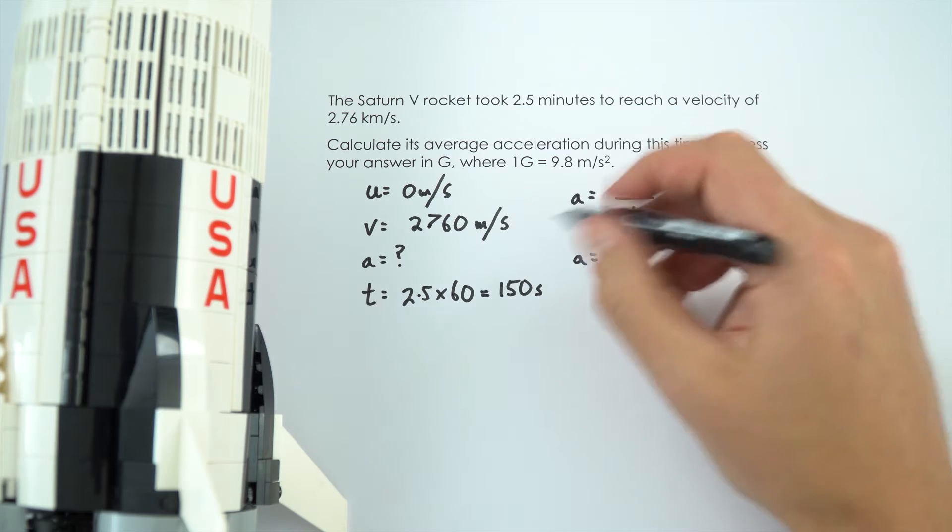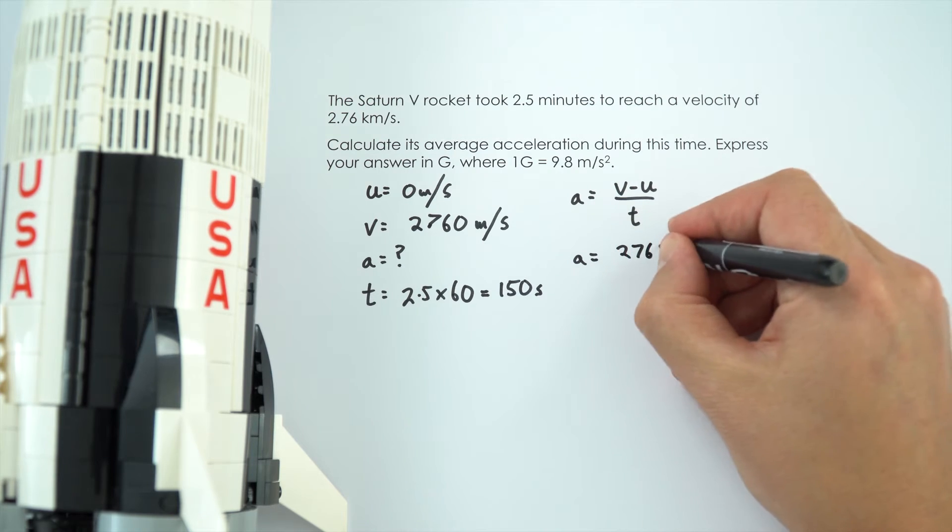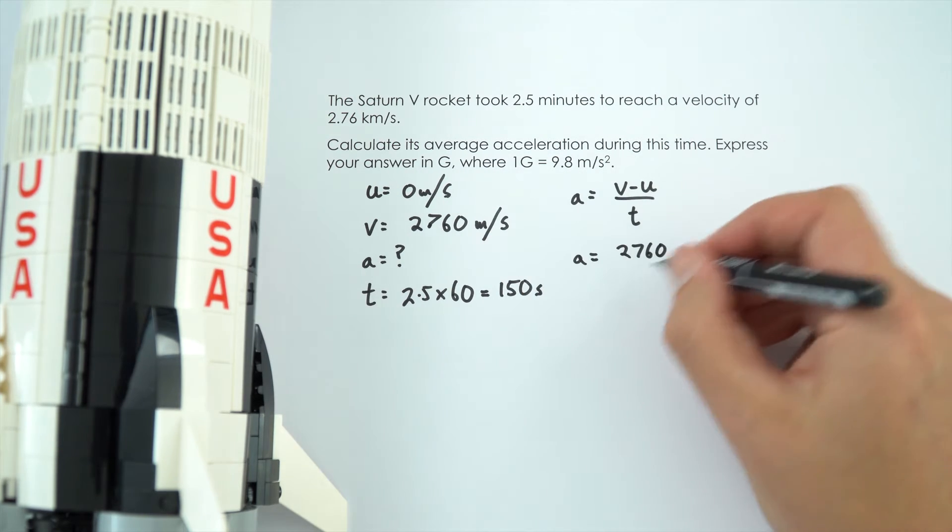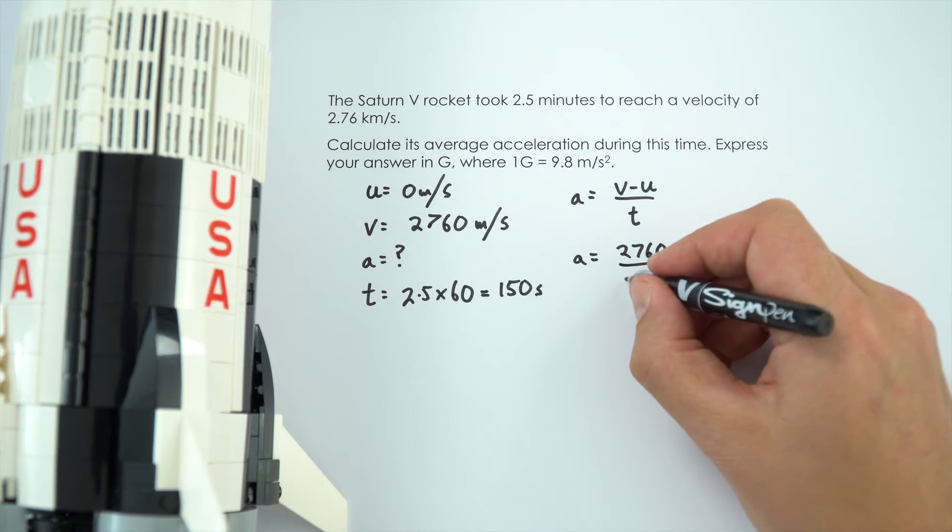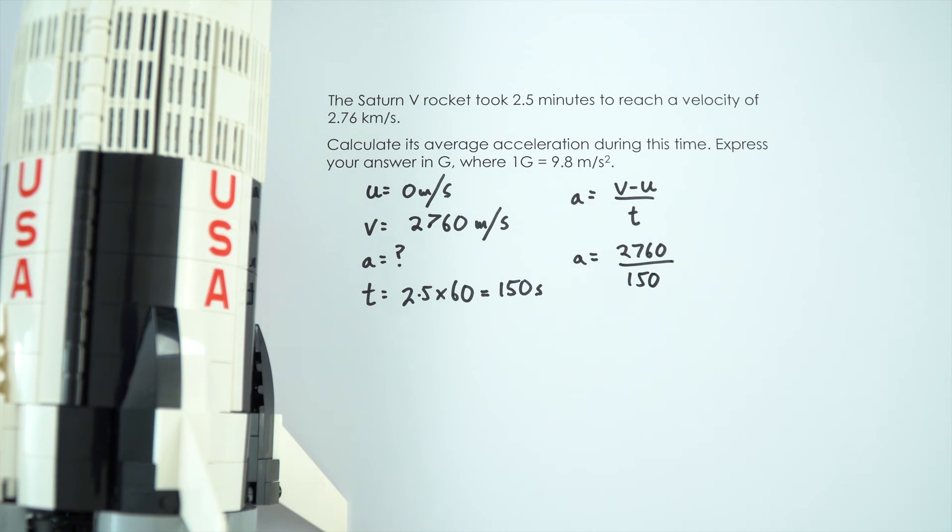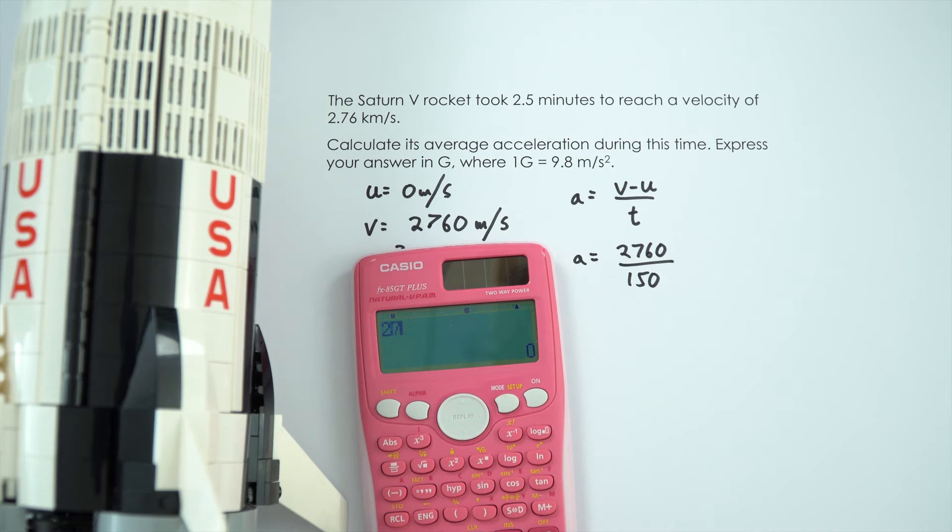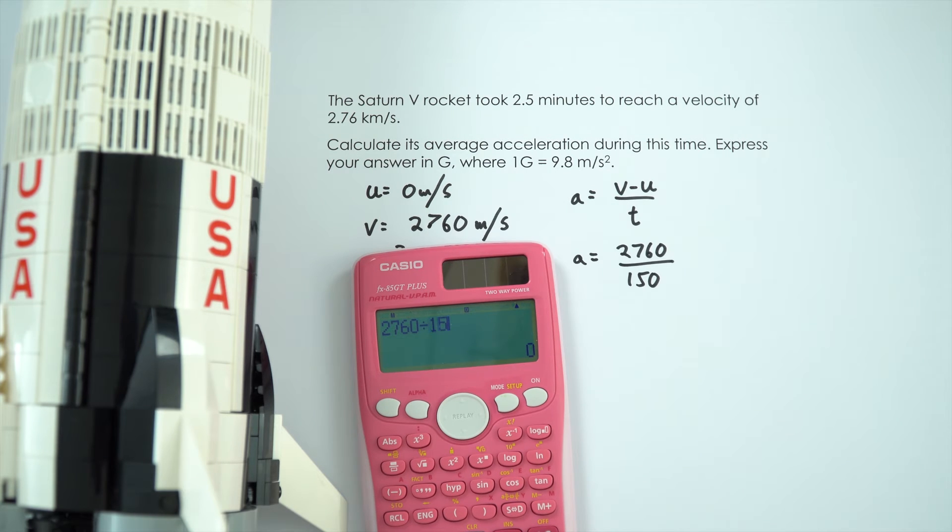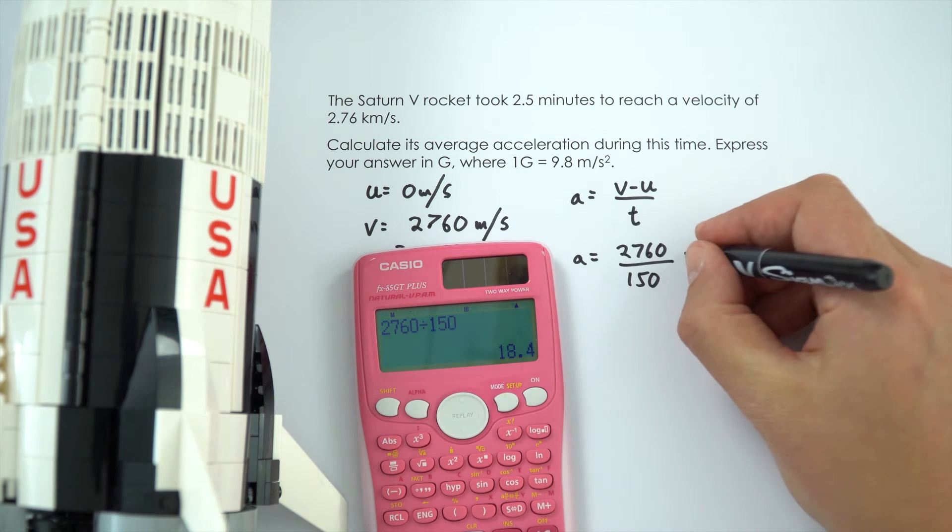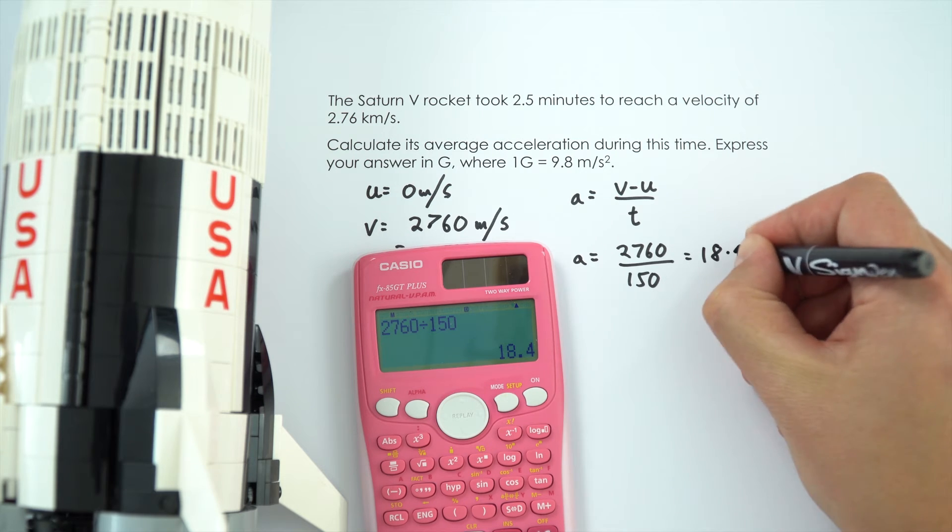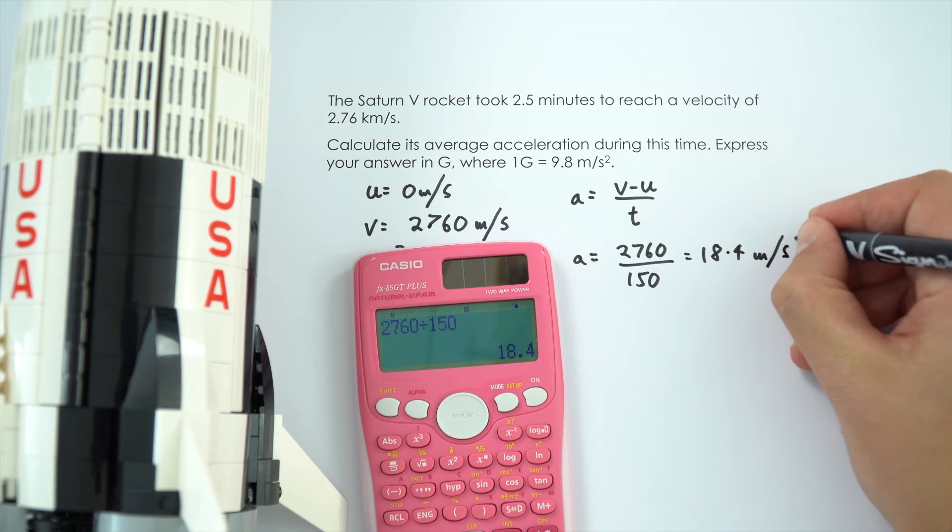So the acceleration is going to be equal to 2760 take away 0 divided by 150. So it works out 2760 divided by 150 gives an answer equal to 18.4 metres per second squared.